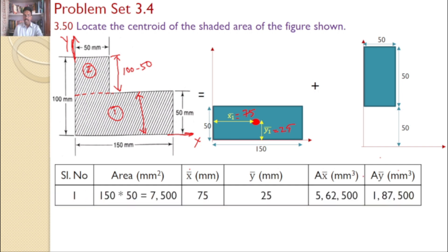Now let me finish serial number 1 area. Rectangle area 150 by 50, that is 7,500. x1 bar equals 75, y1 bar equals 25, and A into x bar and A into y bar, this much. Similarly for area 2.